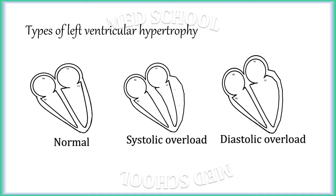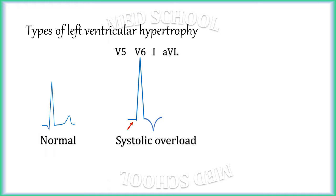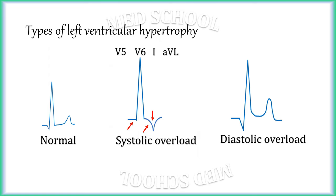These two types can be differentiated on ECG. The differentiating features are seen distinctly on lateral leads — leads V5, V6, I, and aVL. In LVH due to systolic overload, the Q wave diminishes in amplitude or disappears, there is ST segment depression with convexity upward, and the T wave gets inverted. In LVH due to diastolic overload, the Q wave increases in amplitude, the ST segment is elevated with concavity upward (usually 1 mm or less), and the T wave is tall and symmetrical.